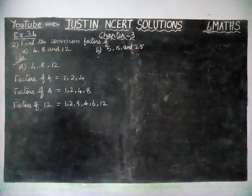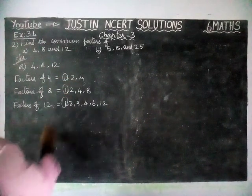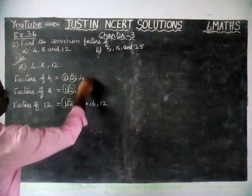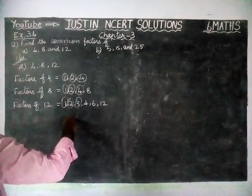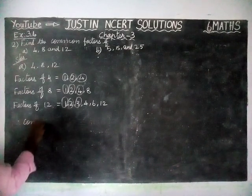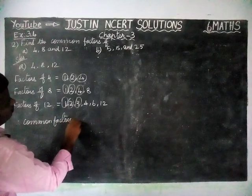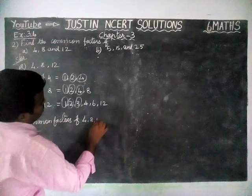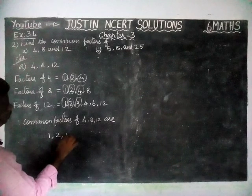Then we have to mark all the common factors. 1 is in all 3 places. Next, 2 is also in all 3 places. Next, number 4 is also in all 3 places. Therefore, common factors of 4, 8, 12 are 1, 2, 4.